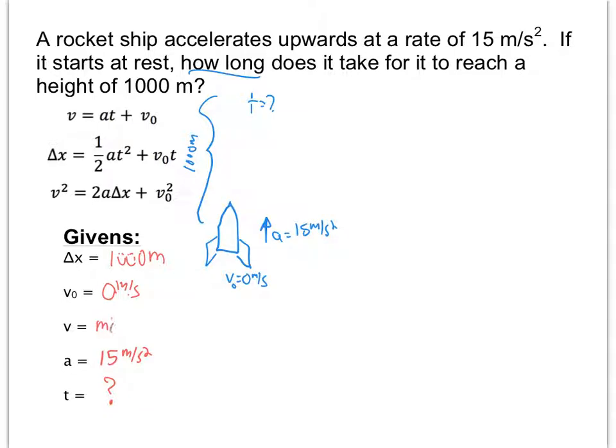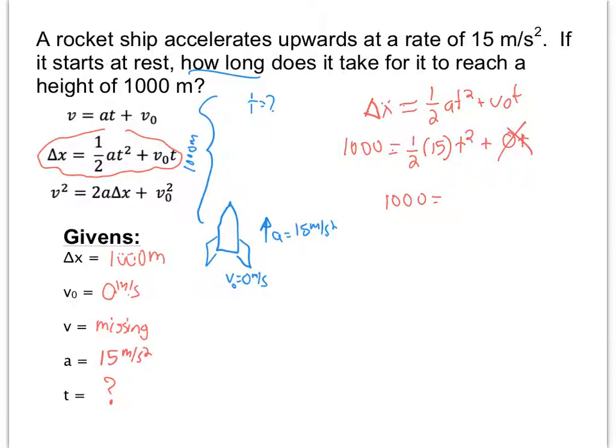Okay, which means that our final velocity is missing in this one. Okay, now looking at our equations, it looks like that the equation that we want that's missing final velocity is this one. So notice how this one does not have final velocity. So writing down the equation. And let's plug in what we know. We've got 1,000 for our displacement. We've got one half. Our acceleration is 15. You want to figure out the time. And we've got the initial velocity times the time. And this term is going to cancel out because this is a zero here. Right? So all we've got to solve is 1,000 is equal to 7.5 times time squared.